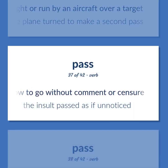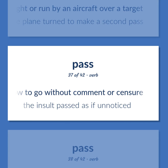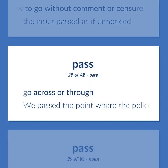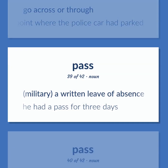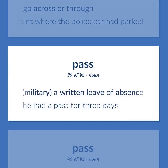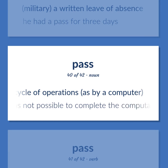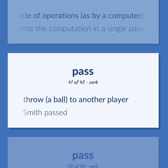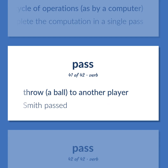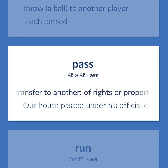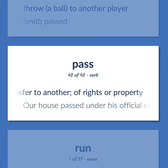Allow to go without comment or censure — 'The insult passed as if unnoticed.' Go across or through — 'We passed the point where the police car had parked.' Military: a written leave of absence — 'He had a pass for three days.' One complete cycle of operations, as by a computer — 'It was not possible to complete the computation in a single pass.' Throw a ball to another player — 'Smith passed.' Transfer to another, of rights or property — 'Our house passed under his official control.'